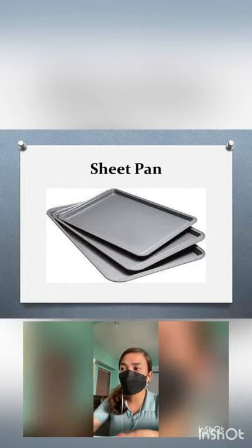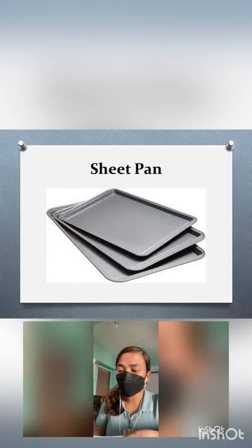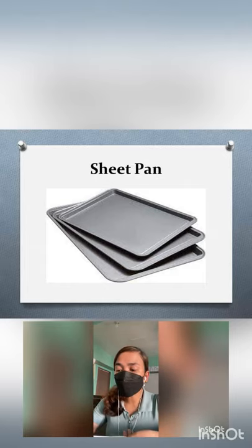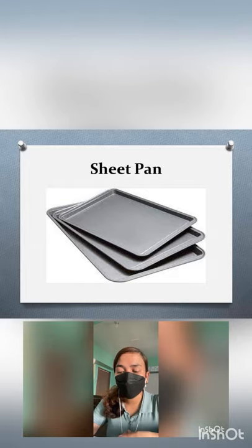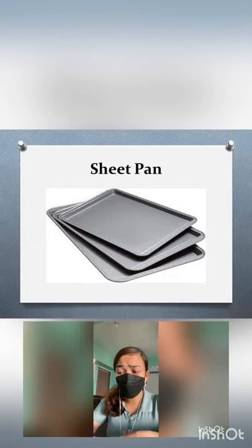Next, we have the sheet pan — also called a baking tray or baking sheet — a flat, rectangular metal pan used in an oven. It is often used for baking bread rolls, pastries, and flat products such as cookies.